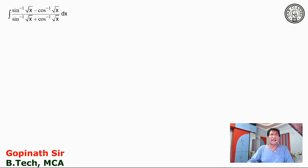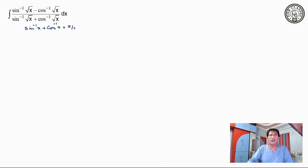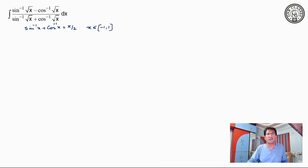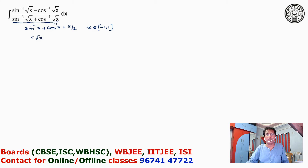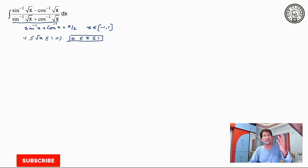Here we know that sin inverse x plus cos inverse x equals pi by 2, but only when x lies between minus 1 and 1. So in this case, if we observe the denominator, we can replace sin inverse under root x plus cos inverse under root x by pi by 2, only when x lies between 0 and 1.